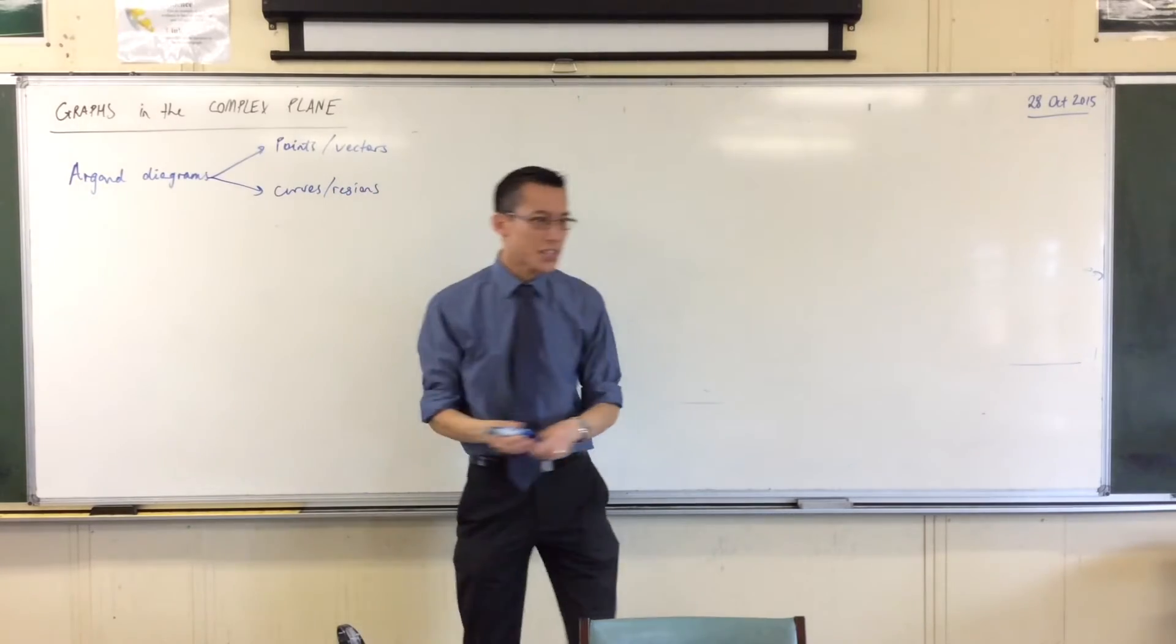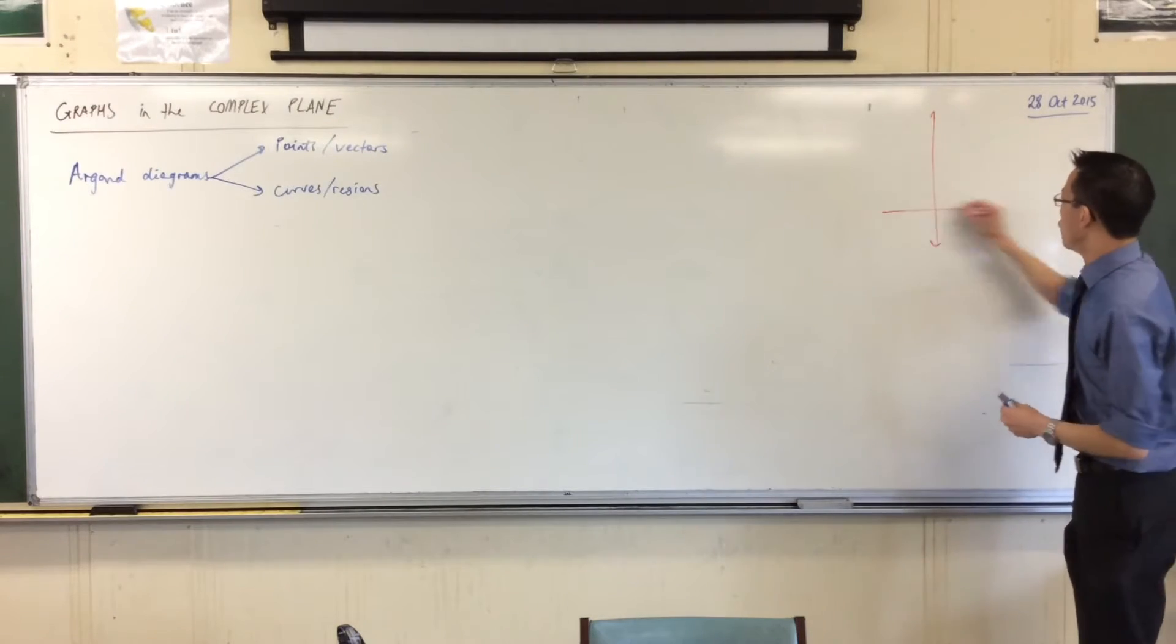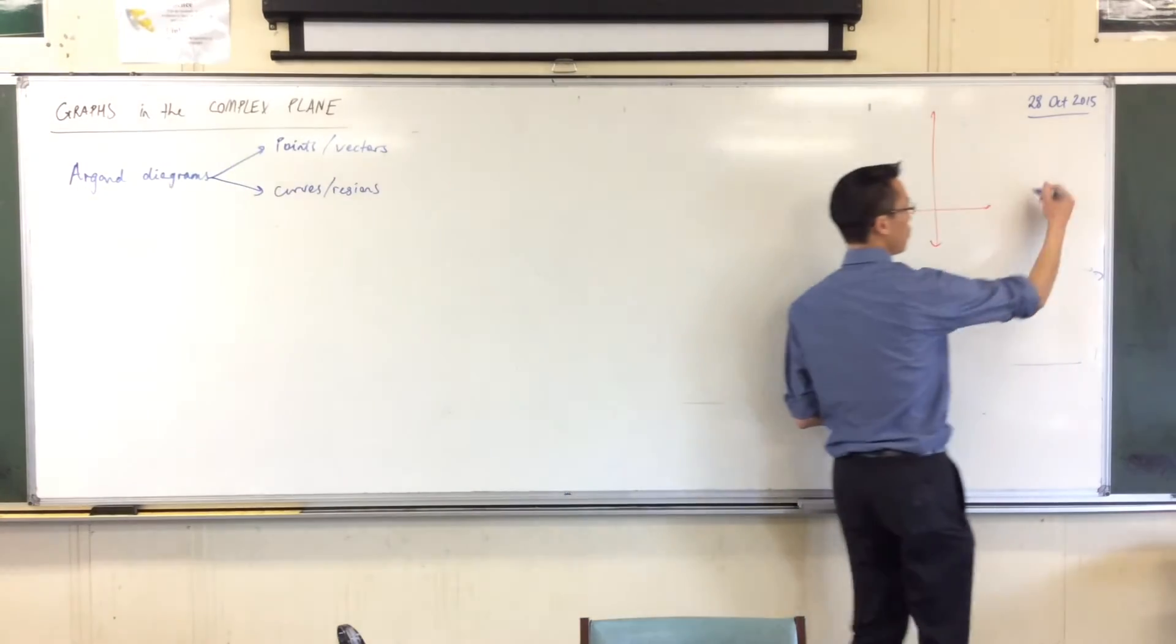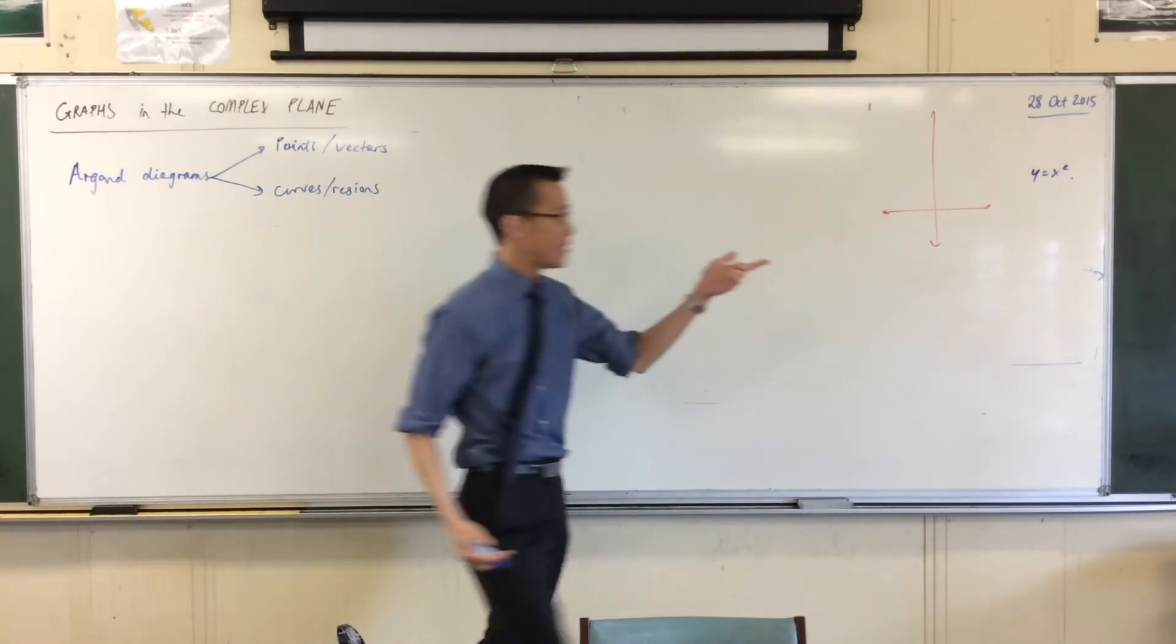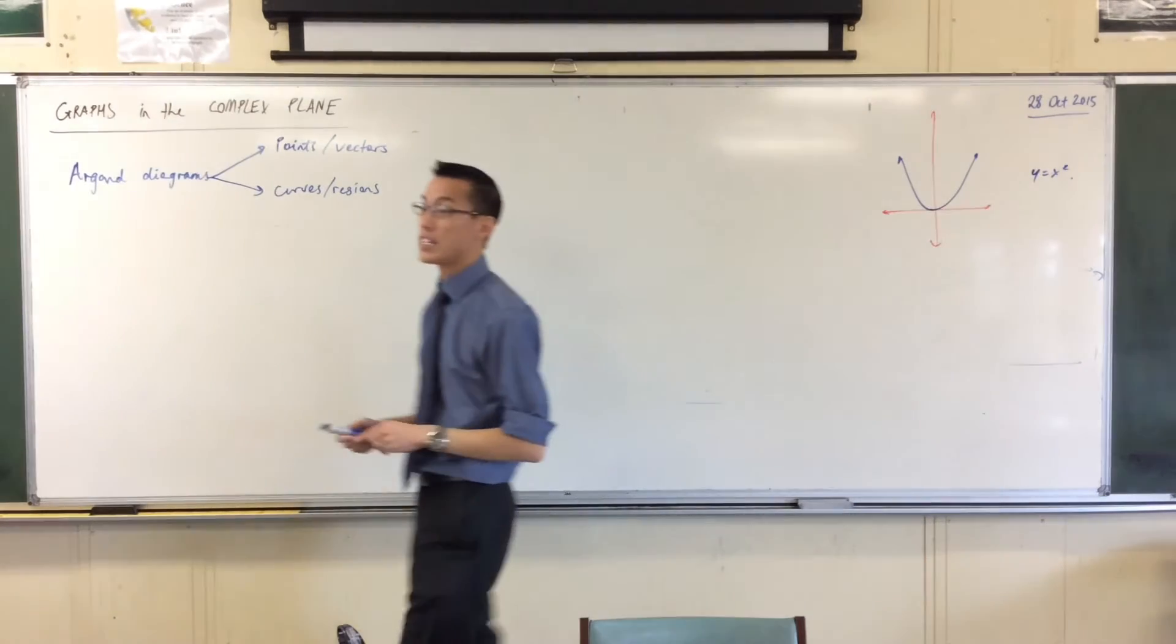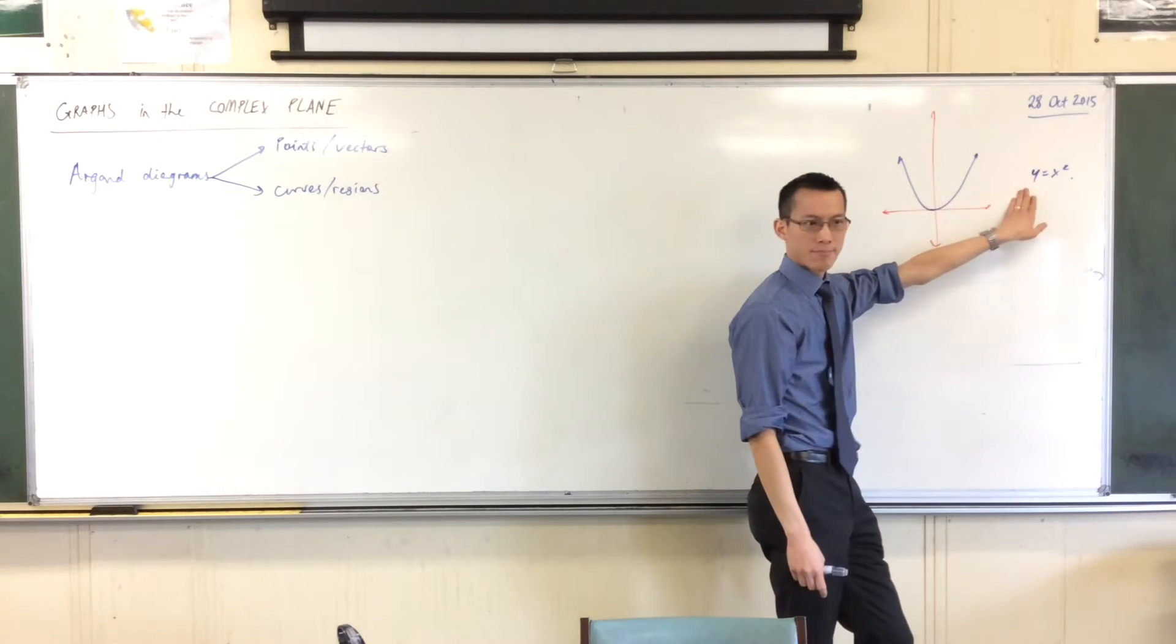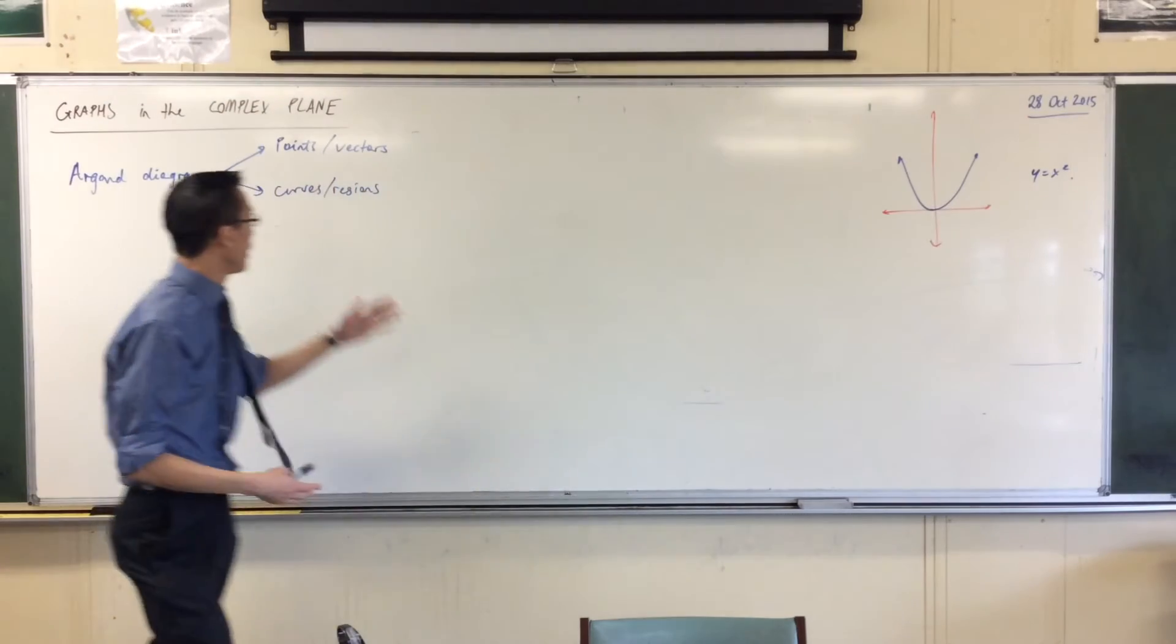For instance, just think in terms of the Cartesian plane. If you have not just some actual coordinates, but if I say y equals x squared. Now, we all know what y equals x squared looks like. What it means is, I'm not looking at a bunch of individual points, but I'm looking at that set of points, all of the points such that if you look at y, its value is the x value squared. It's a set of points, it's a collection, it's a curve.